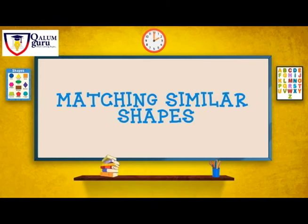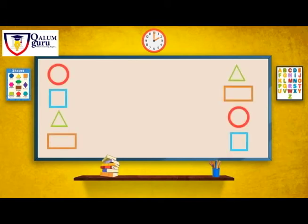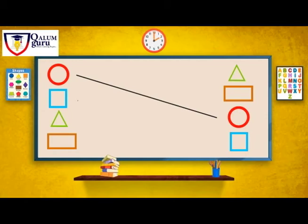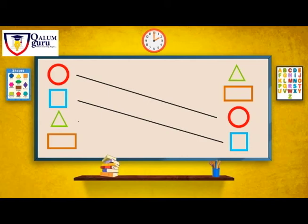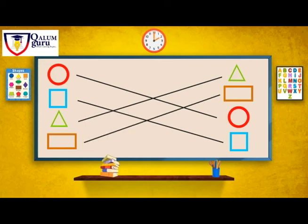Matching the similar shapes. Let's match the similar shapes in the list. We will match circle with circle, triangle with triangle, square with square, and rectangle with rectangle.